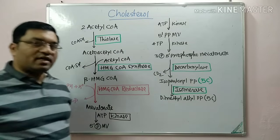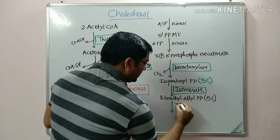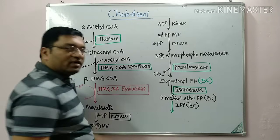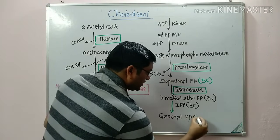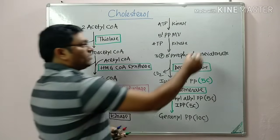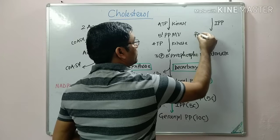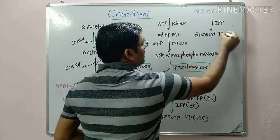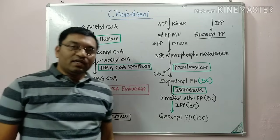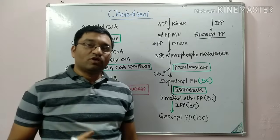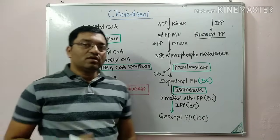Now a condensation reaction occurs by which dimethylallyl pyrophosphate condenses with isopentenyl pyrophosphate, which is a 5-carbon compound, forming geranyl pyrophosphate, a 10-carbon compound. This geranyl pyrophosphate then condenses with isopentenyl pyrophosphate to give farnesyl pyrophosphate. Farnesyl pyrophosphate is important in the synthesis of dolichol and also in the prenylation of proteins, which is a post-translational modification helping in protein targeting.